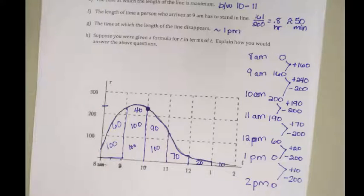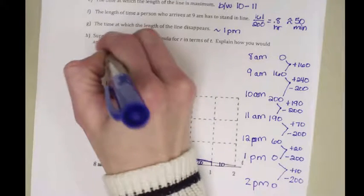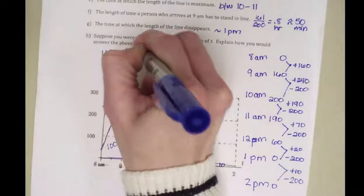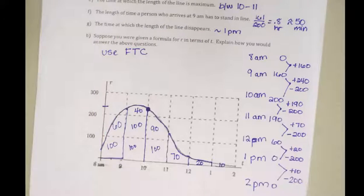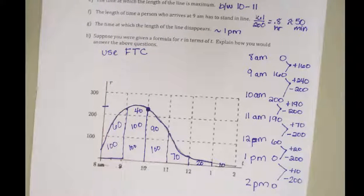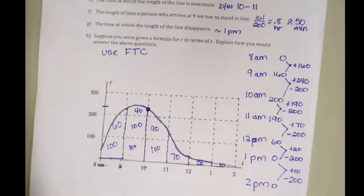Suppose we actually had an equation for r. How could we answer these questions differently? If we knew what r was, we could use the fundamental theorem and actually solve it in the calculator using integrals, getting exact values instead of approximations — but we don't know it, so we can't.